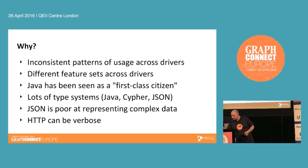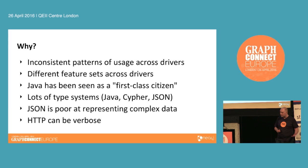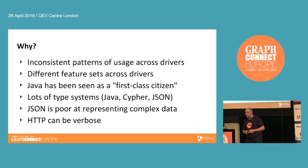We've seen some inconsistent patterns of usage across the drivers in the past and different feature sets available depending on what language you're in. Java has often been seen as a bit of a first-class citizen, so if you're not a Java developer, you may feel a bit hard done by at times. There have been lots of type systems to deal with — the Java type system, Cypher types, and if you're using the HTTP interface, JSON and the fun that comes with that. JSON itself is quite poor at representing complex data. HTTP itself can be a bit limiting and verbose — you're going to ship HTTP headers with each request and response, and we can do away with some of that and reduce the payload overall.